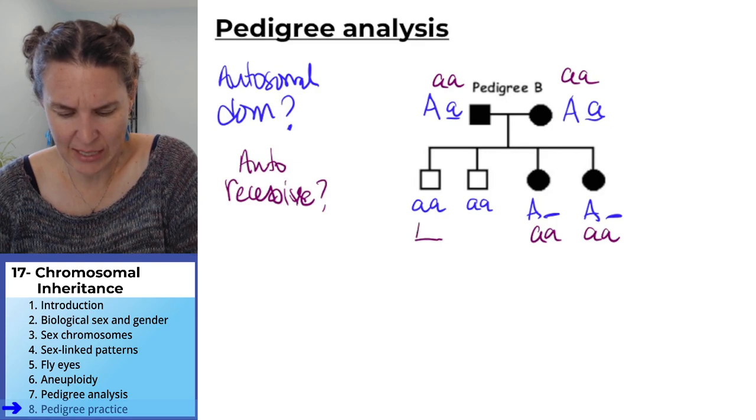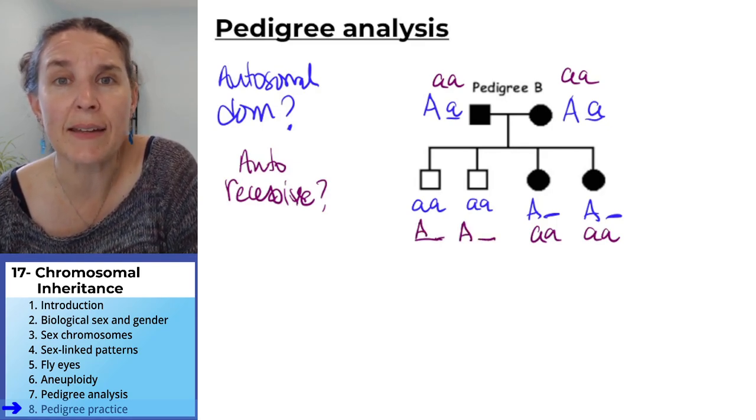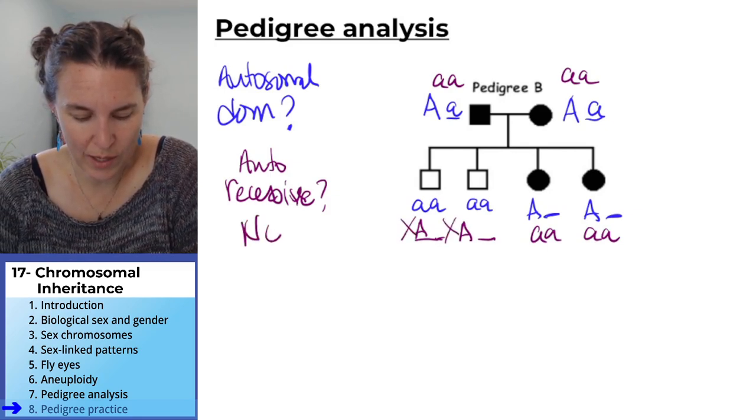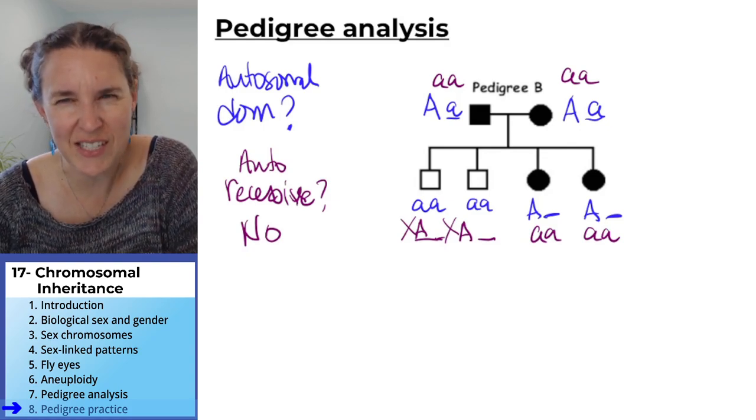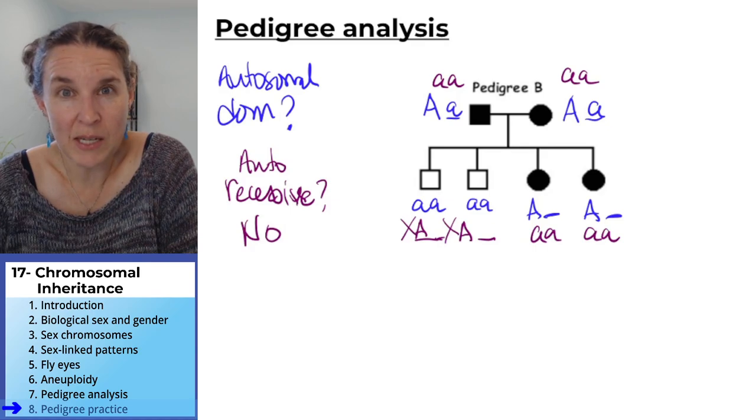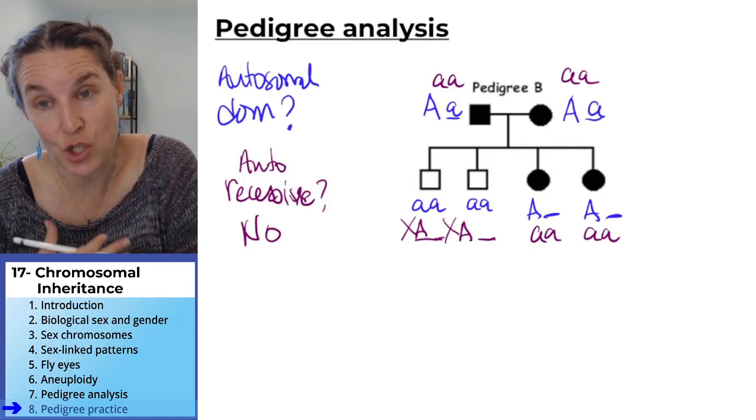But these guys have to have at least one dominant allele. Where would they get it? They can't. So no, it couldn't be autosomal recessive. Does that make sense? Because there's nowhere to get that dominant allele that would make it so you didn't show the condition.